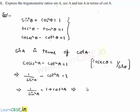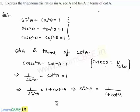Transposing, sin²a = 1/(1 + cot²a). Now by applying the square root on both sides, we get sin a = 1/√(1 + cot²a).